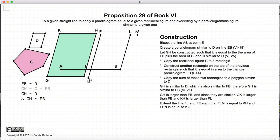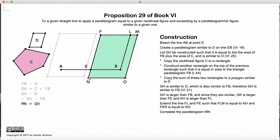And now we draw the parallelogram MN. MN is equal to GH, which I've grayed out so that we can see more of what's happening. So MN is equal to the area of C plus the area of FB, and it is similar to D.